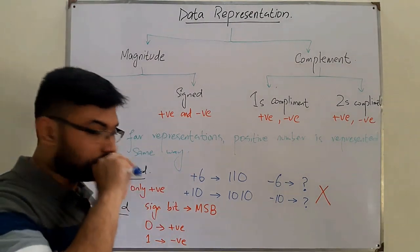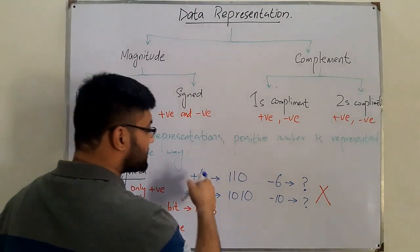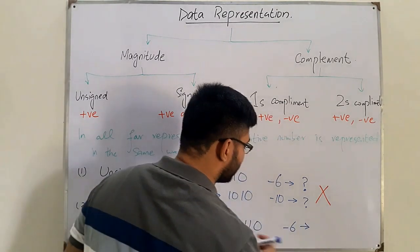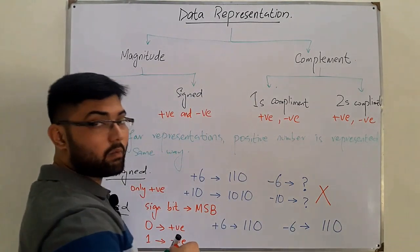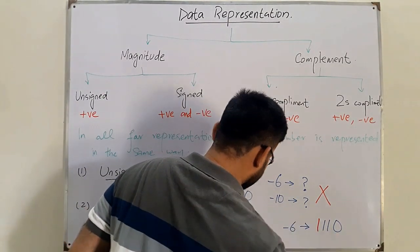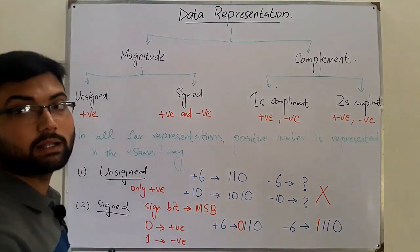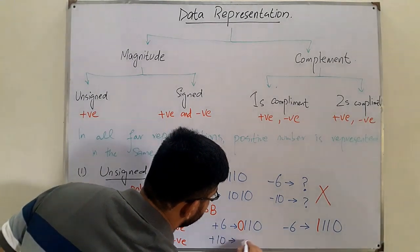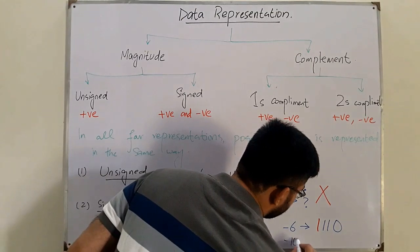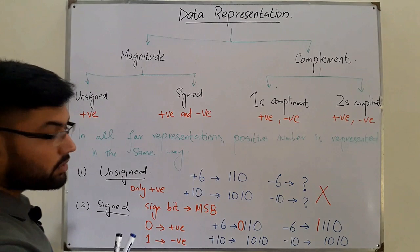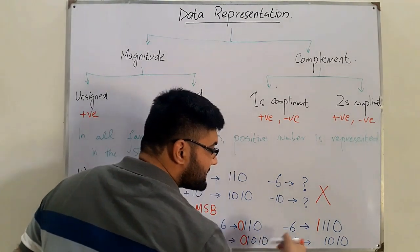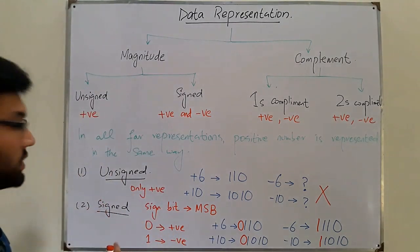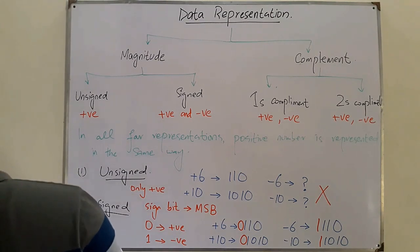Taking examples: for plus six, we write 110 and place a zero at the MSB, giving 0110. For minus six, we write the same 110 and place a one at the MSB, giving 1110. Similarly, plus ten is 01010 with a zero at MSB, and minus ten is 11010 with a one at MSB. The sign bit indicates the sign of the number.